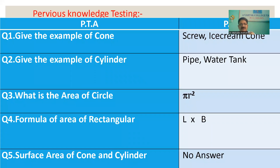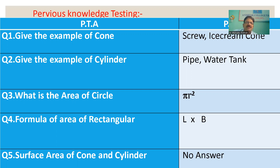To check the knowledge of students, ask some questions based on their previous syllabus. To introduce the surface area of cone and cylinder, you can ask: how can you calculate the surface area of a triangle, how can you calculate the surface area of a square? Once students are able to give answers, you can start the next two questions.